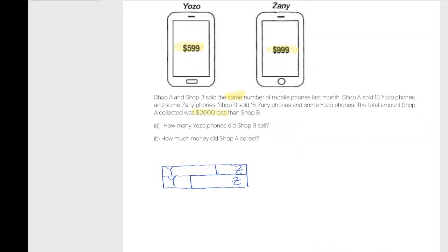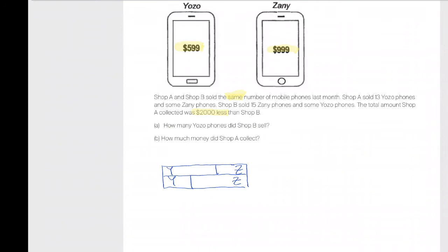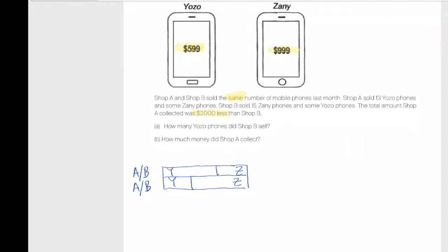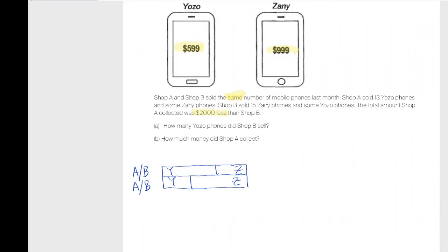Z sold more than Y. More what? Because they sold the same number of phones, it's either more Y or more Z money. More Z. Who sold more Z, A or B?